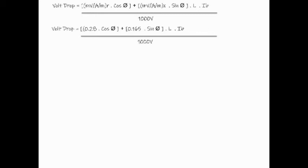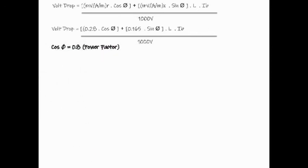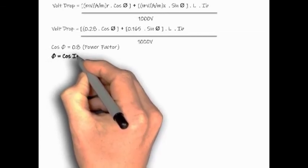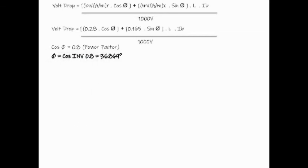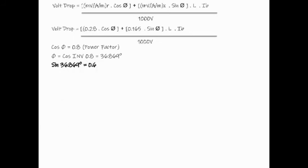Next, we will find the value of theta. We know that the power factor is 0.8, and this means that the cosine theta will give us 0.8, which means if I inverse cosine 0.8, this will give me a theta value of 36.869. If I apply this value into sine of 36.869, I will get a value of 0.6.